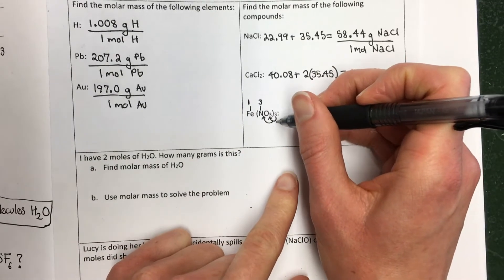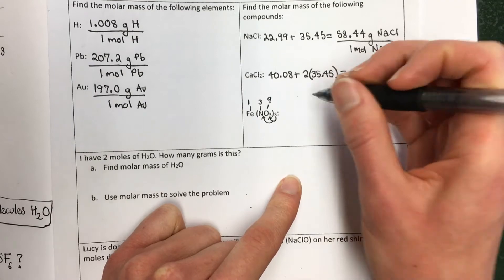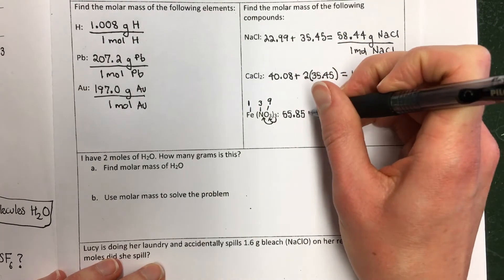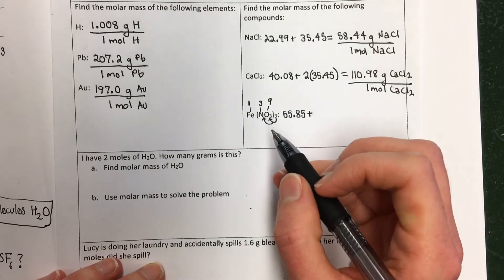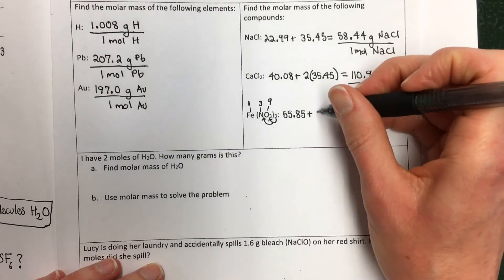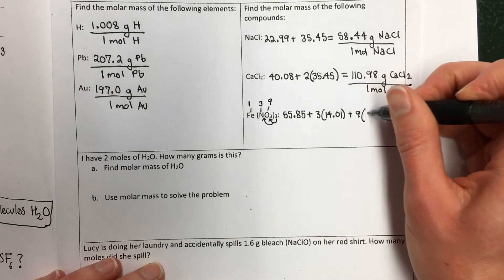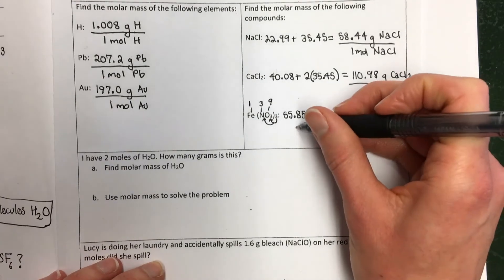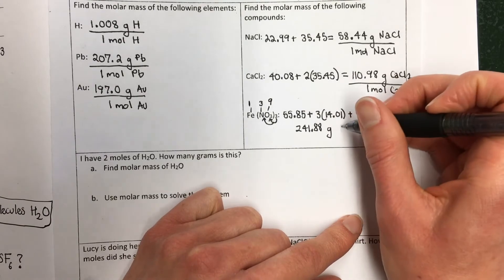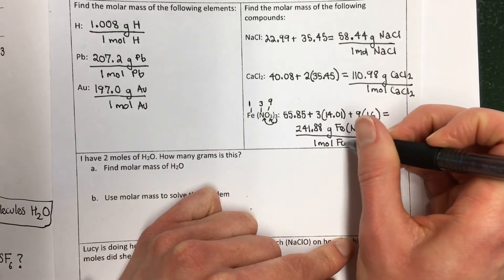The three here, outside the parentheses, multiplies by this three, which gives me nine oxygens. So to add this up, I find the molar mass of iron, which is 55.85, three times N, and then nine times oxygen. You get 241.88 grams of Fe(NO3)3 over one mole of Fe(NO3)3.